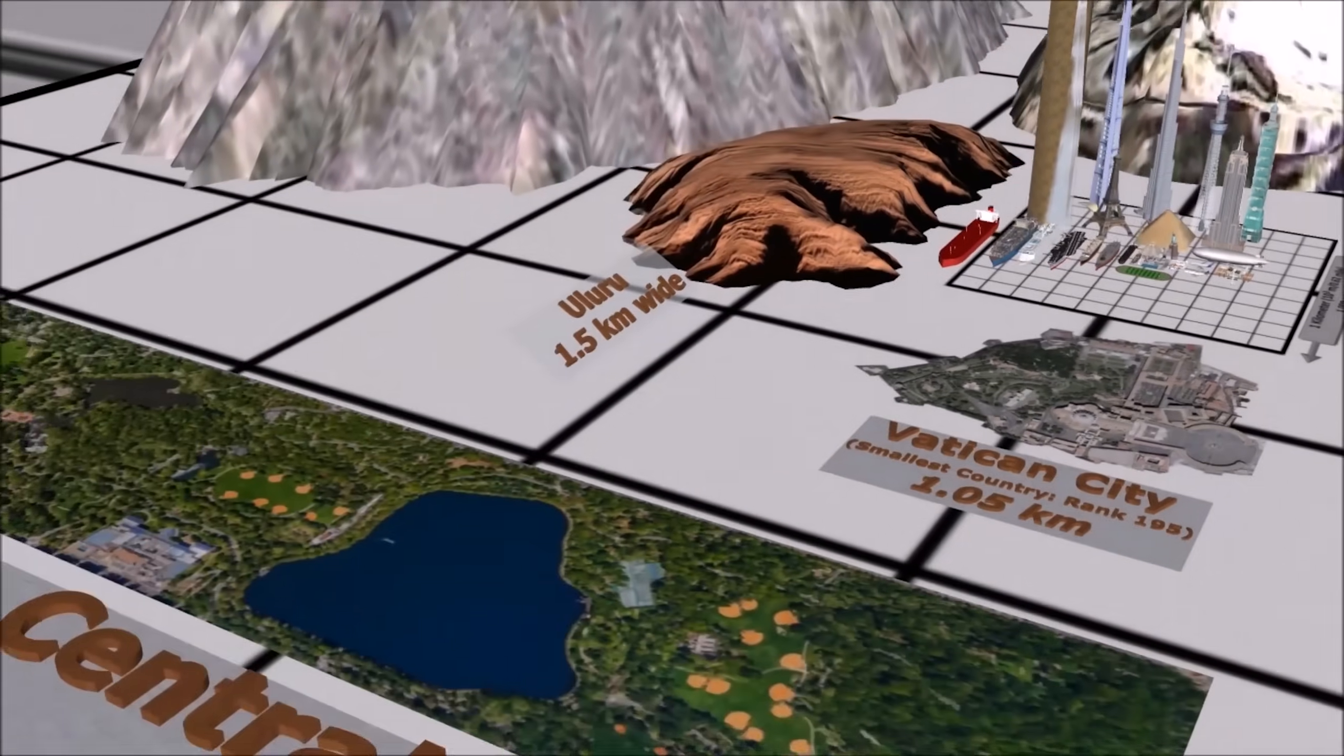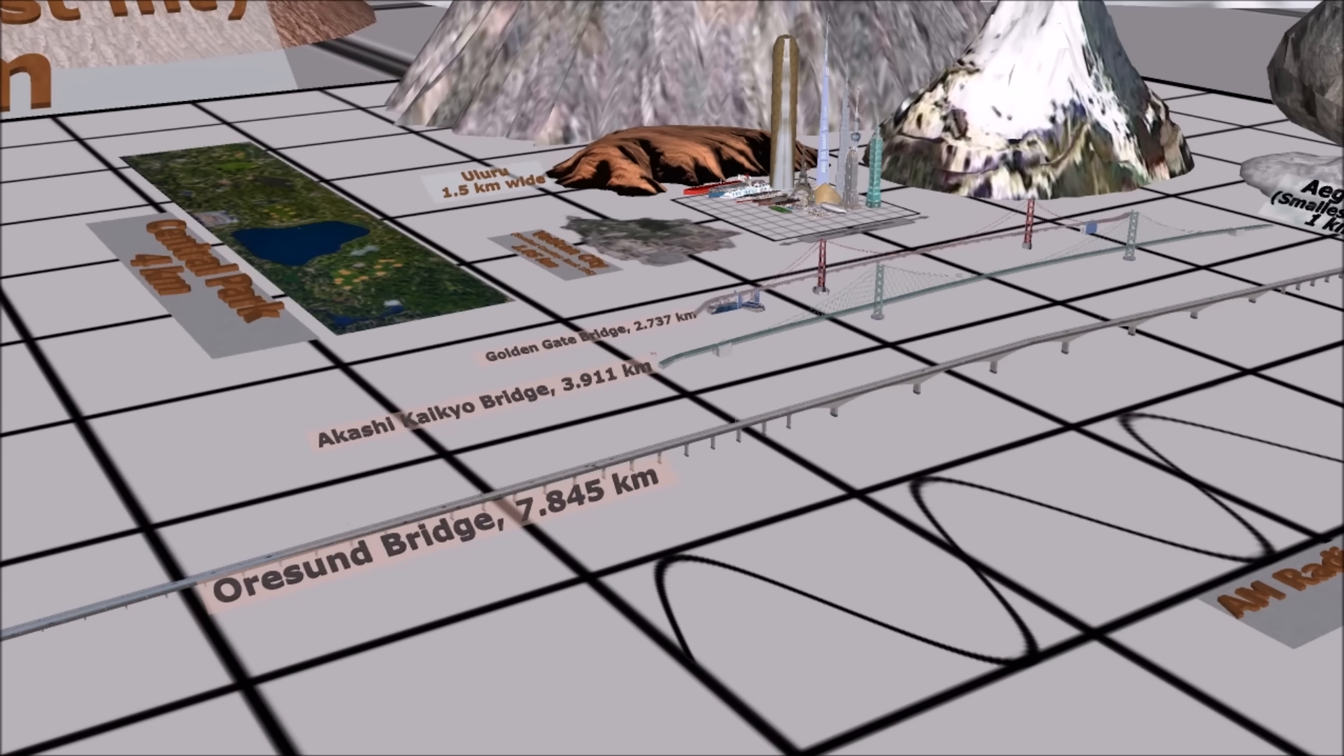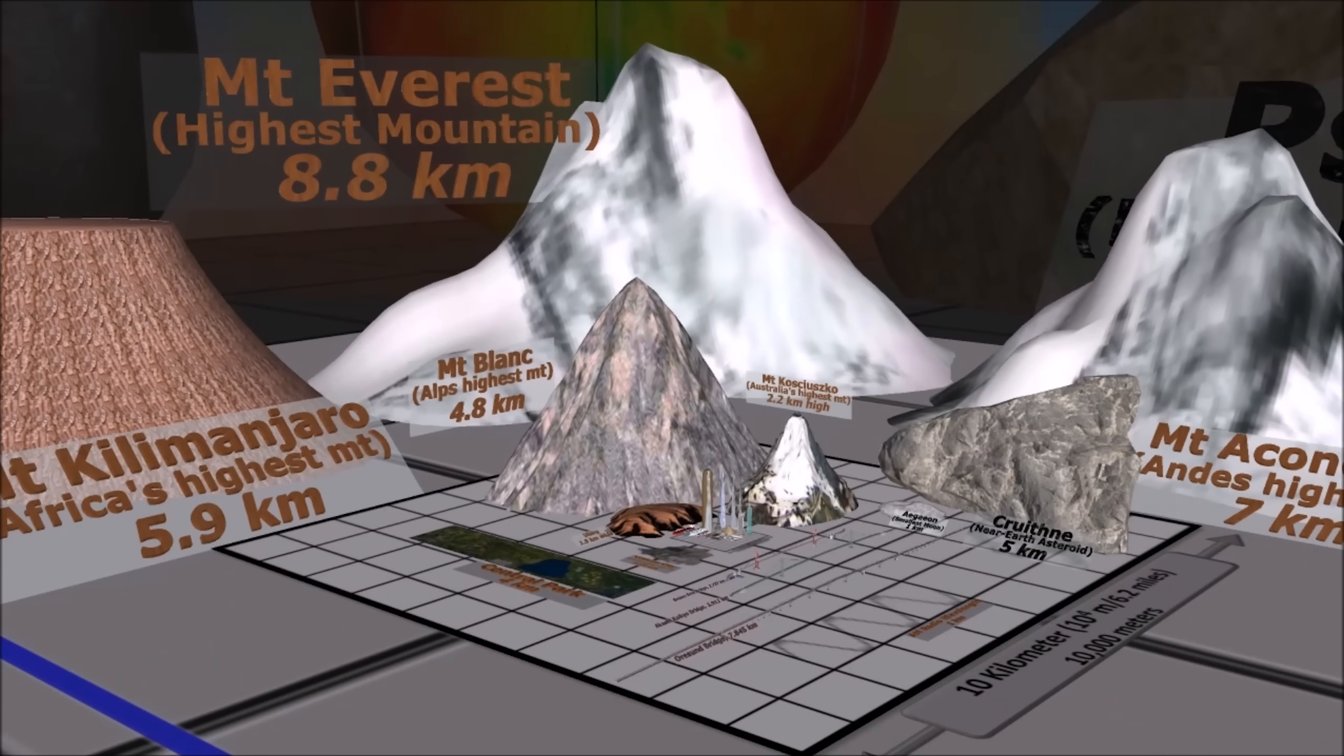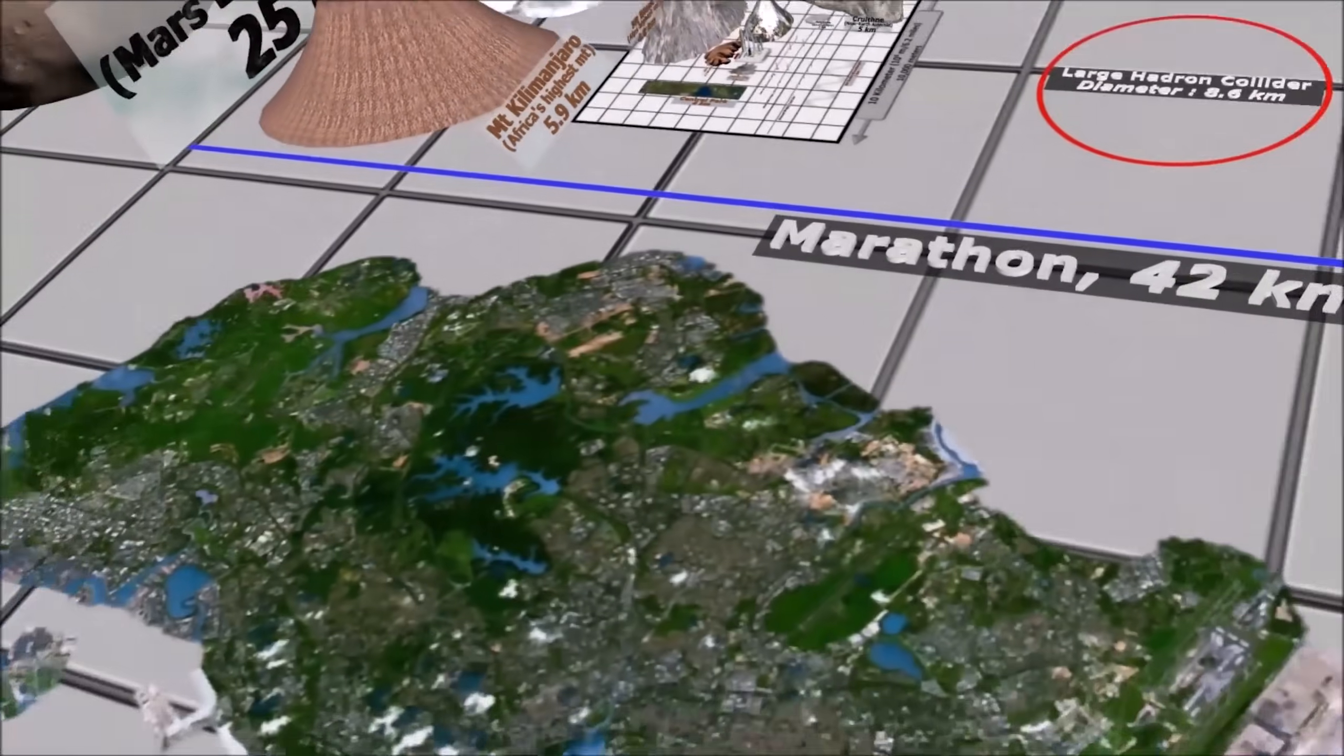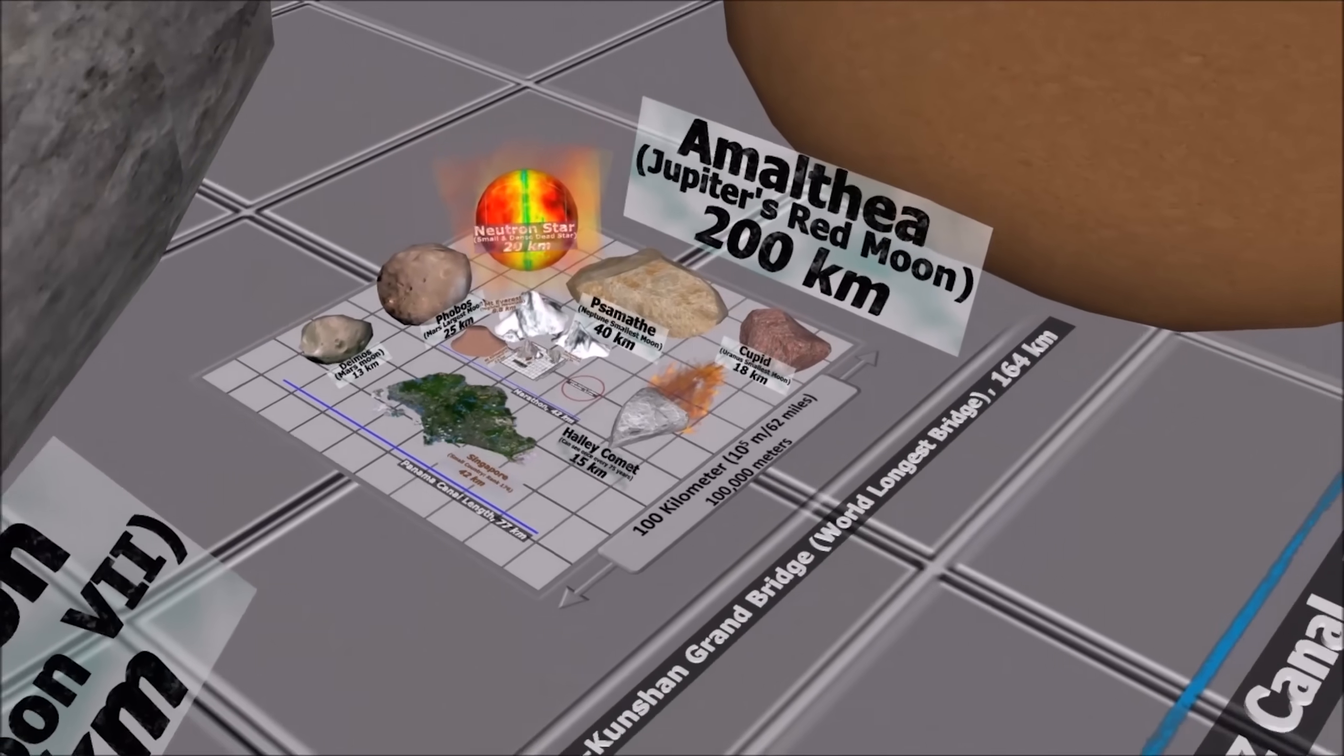We have not only exceeded vertically but horizontally as well. Yet nature always outdoes us, forming landforms reaching incredible heights. But our species spread wide and far. Yet space is a whole new frontier.